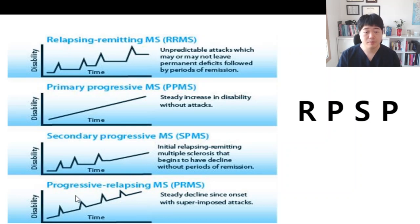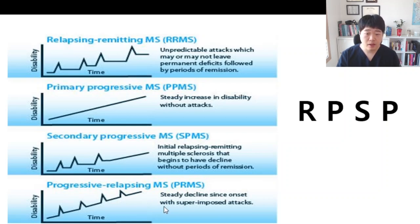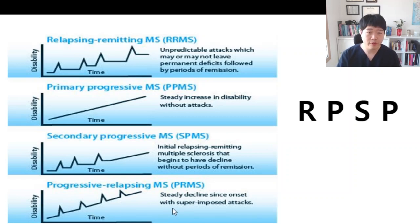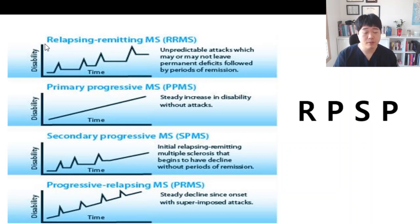And the last is Progressive Relapsing multiple sclerosis. It is getting worse, and the characteristic of this type is frequent superimposed attacks. So you can easily memorize those four different types of multiple sclerosis as R, P, S, P.